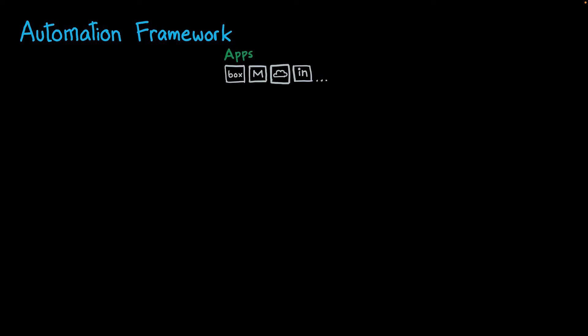Now let's talk about the automation framework. The first element in the automation framework is third-party applications. Watson Orchestrate has a long catalog of applications you can interact with, but even if you don't see your application in the catalog, you can still create new integrations if your application has a set of APIs.